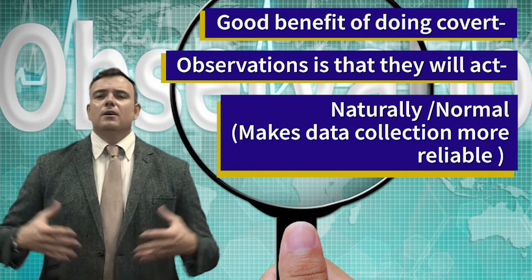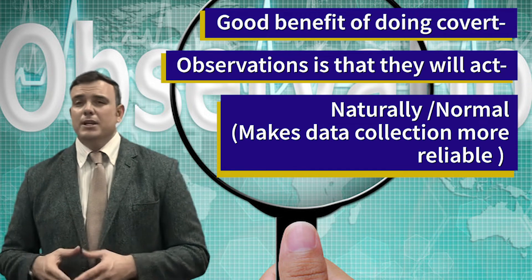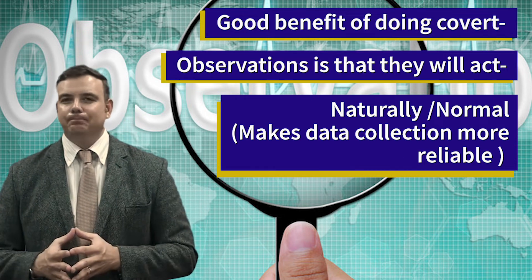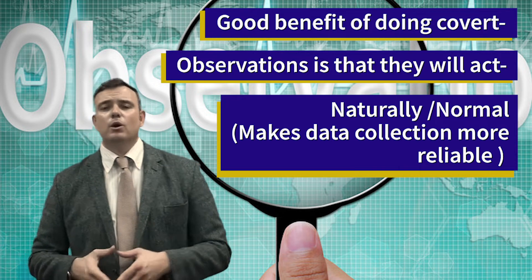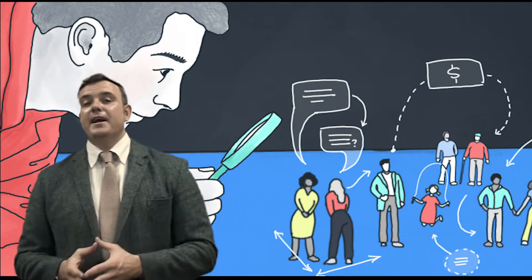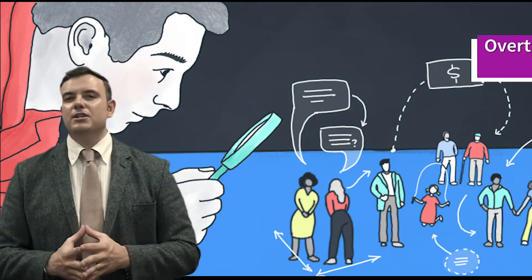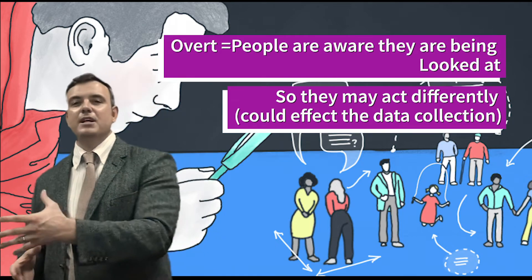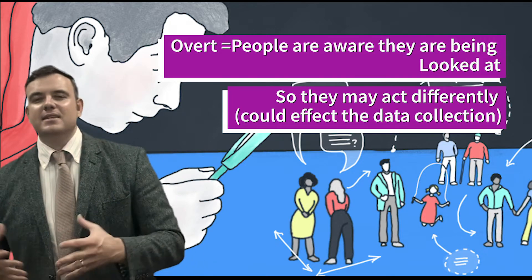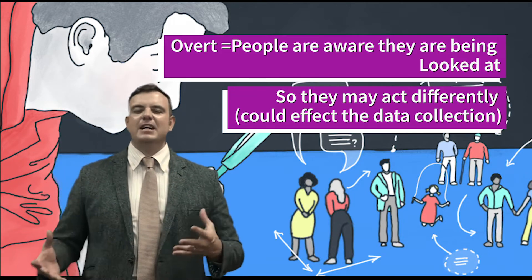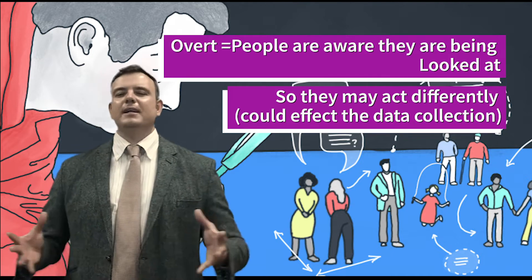The benefit of covert observation is that people will act naturally, because they're not aware they're being observed or looked at. When you normally know that you're being observed, you may behave a little bit differently. On the opposite side, we have what we call overt. Overt is the opposite of covert — people are aware that you are there and observing them and writing down information. They know you're there and are aware that you're taking data or information from them. One drawback is that sometimes people may behave differently if they know they're being observed or looked at.